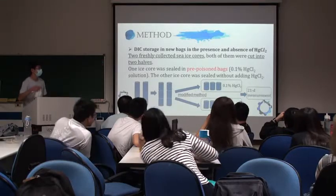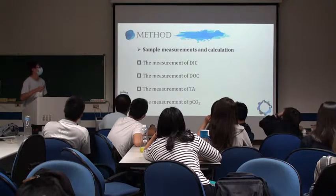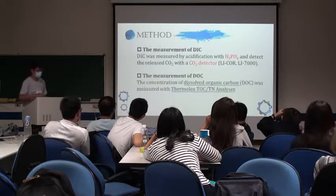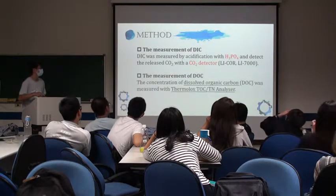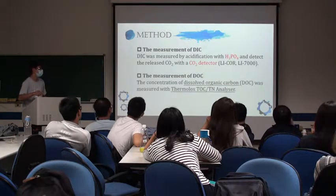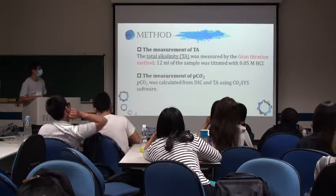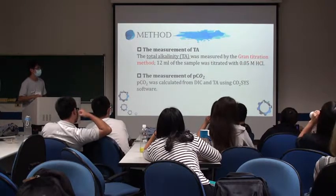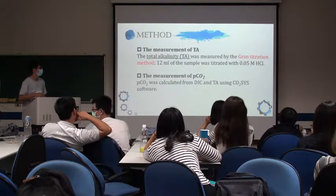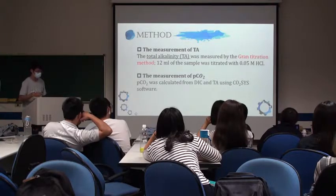A time series measurement was performed over 21 days. After all experiments were done, four data types were measured. DIC was measured by acidification with H3PO4 and detection of released CO2 with a carbon dioxide detector. The concentration of DOC was measured with a dedicated instrument. Total alkalinity was measured by Gran titration — 12 mL of sample was titrated with 0.05 mol HCl. Finally, PCO2 was calculated from DIC and TA using CO2SYS software.